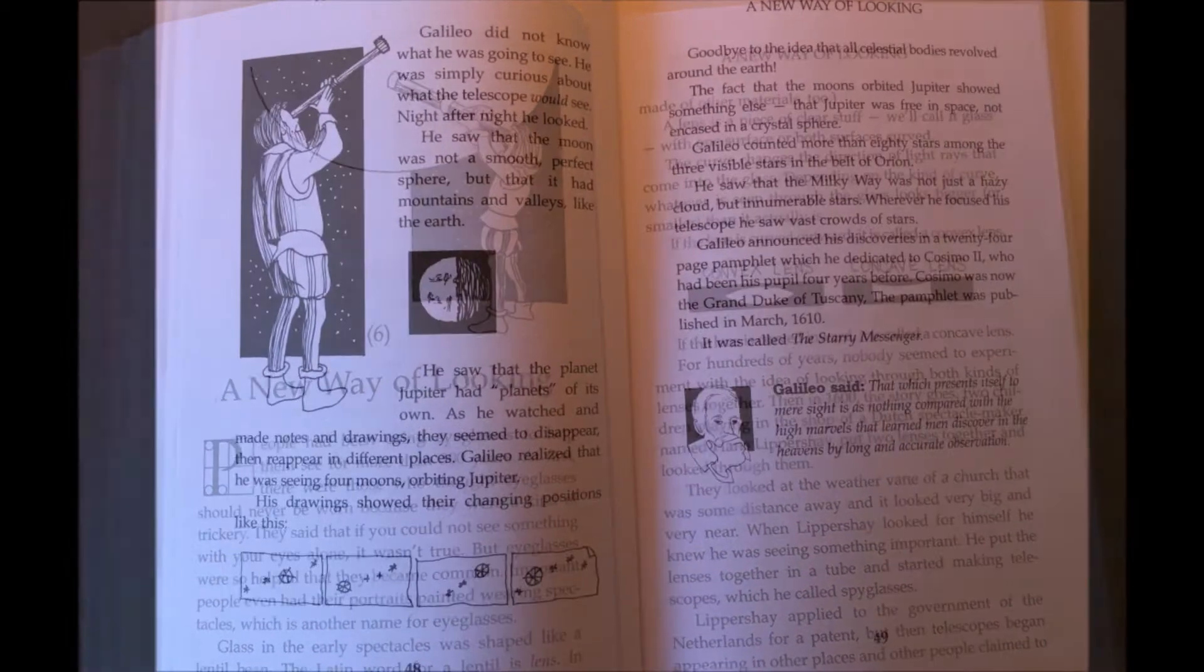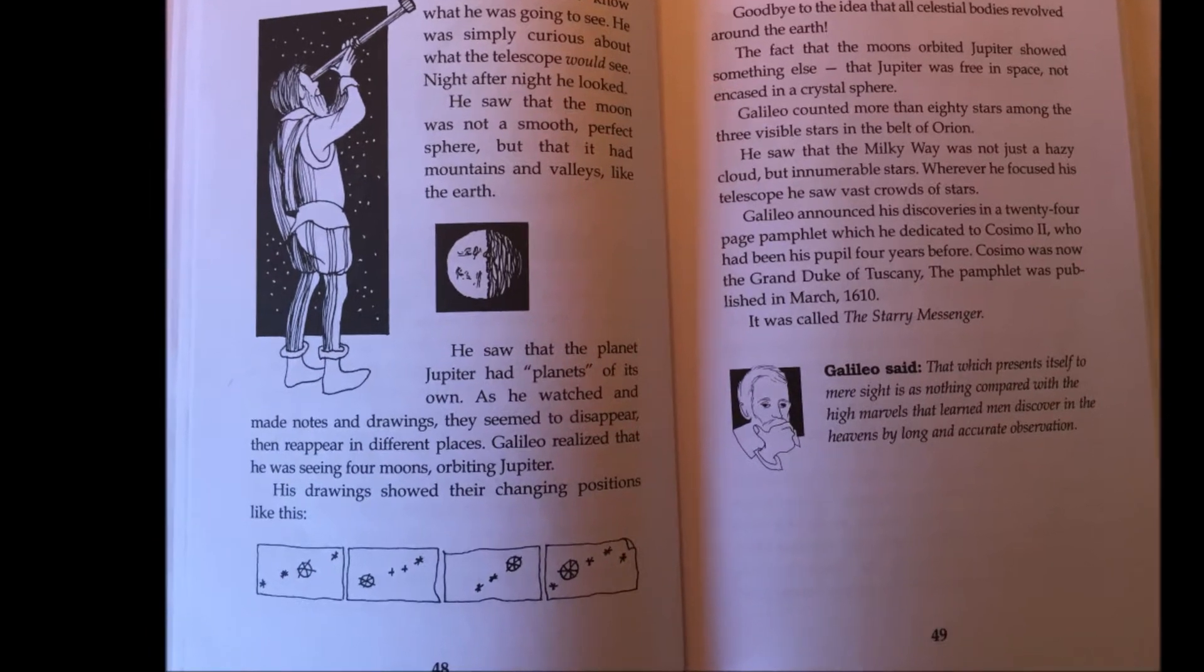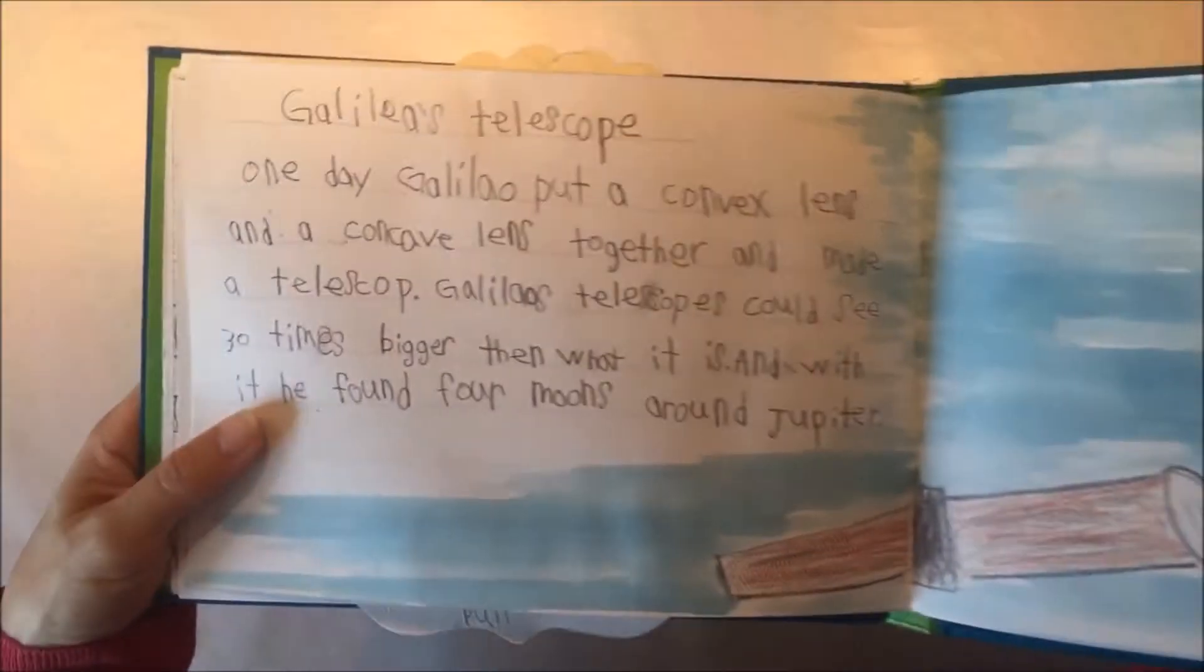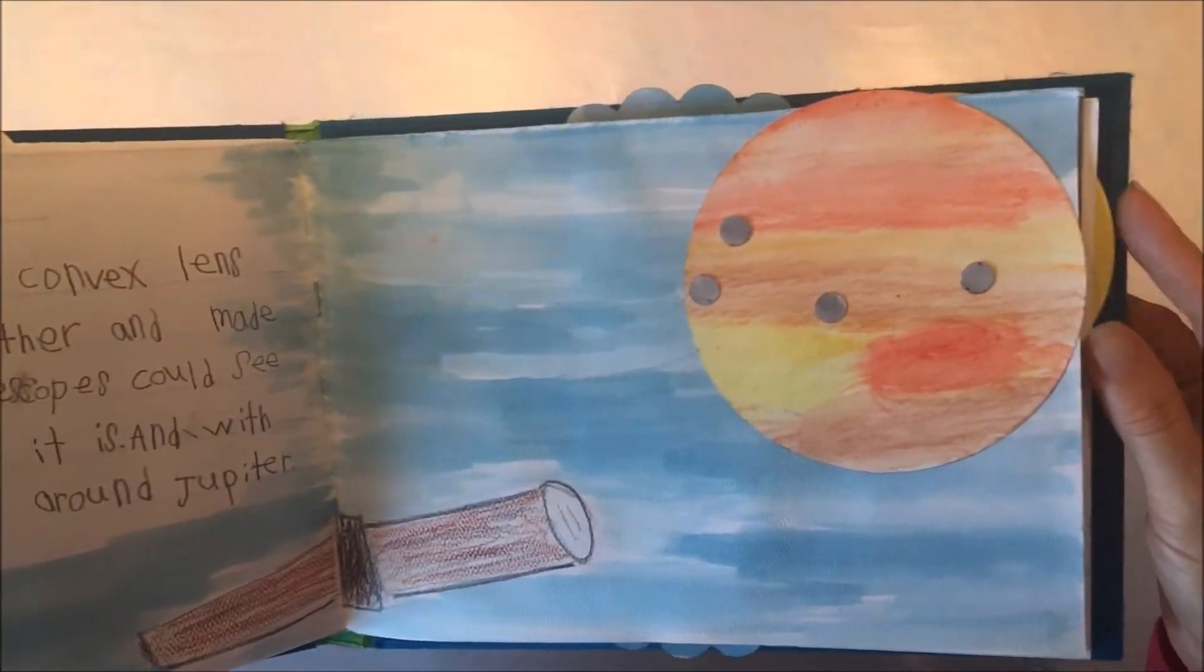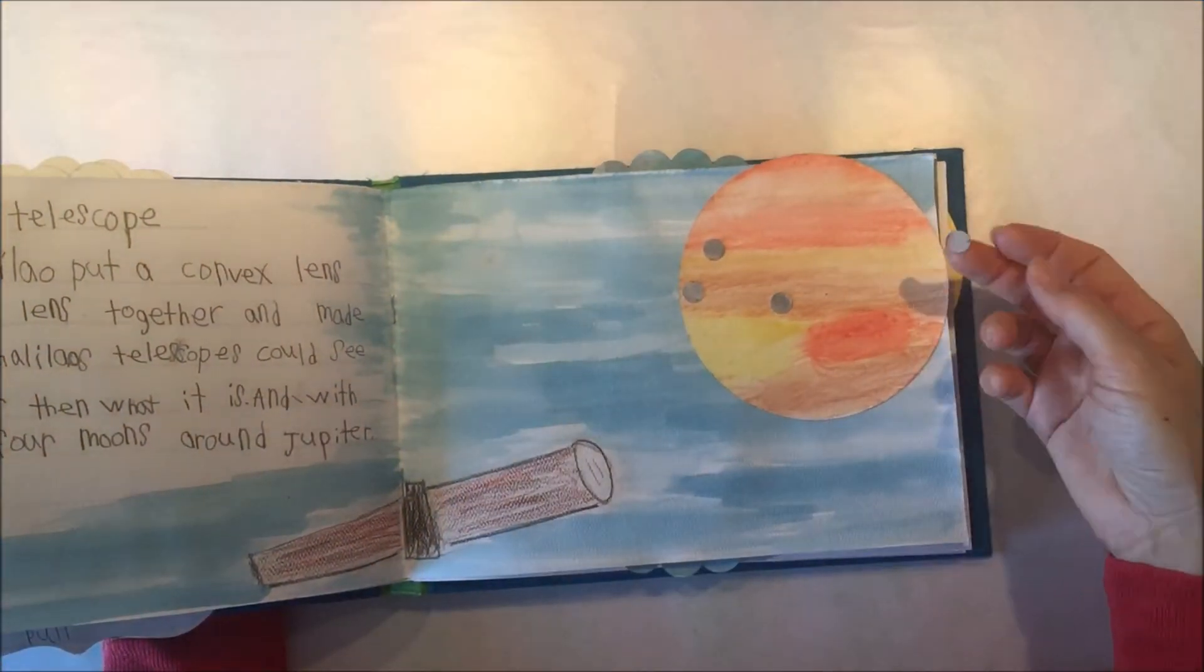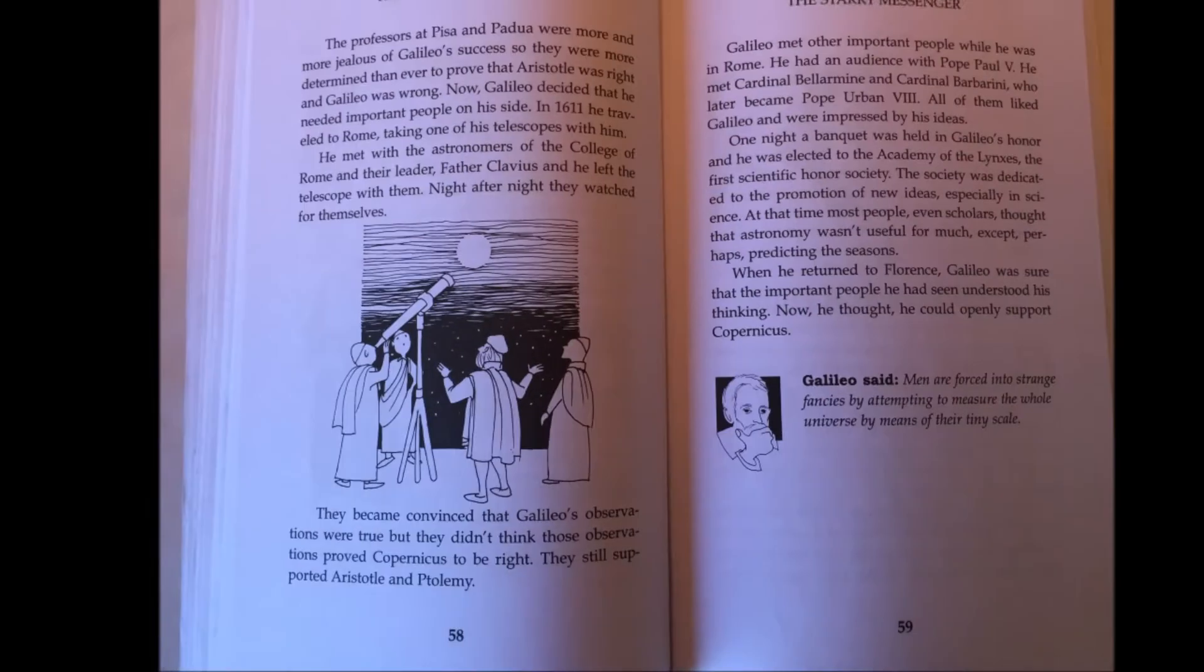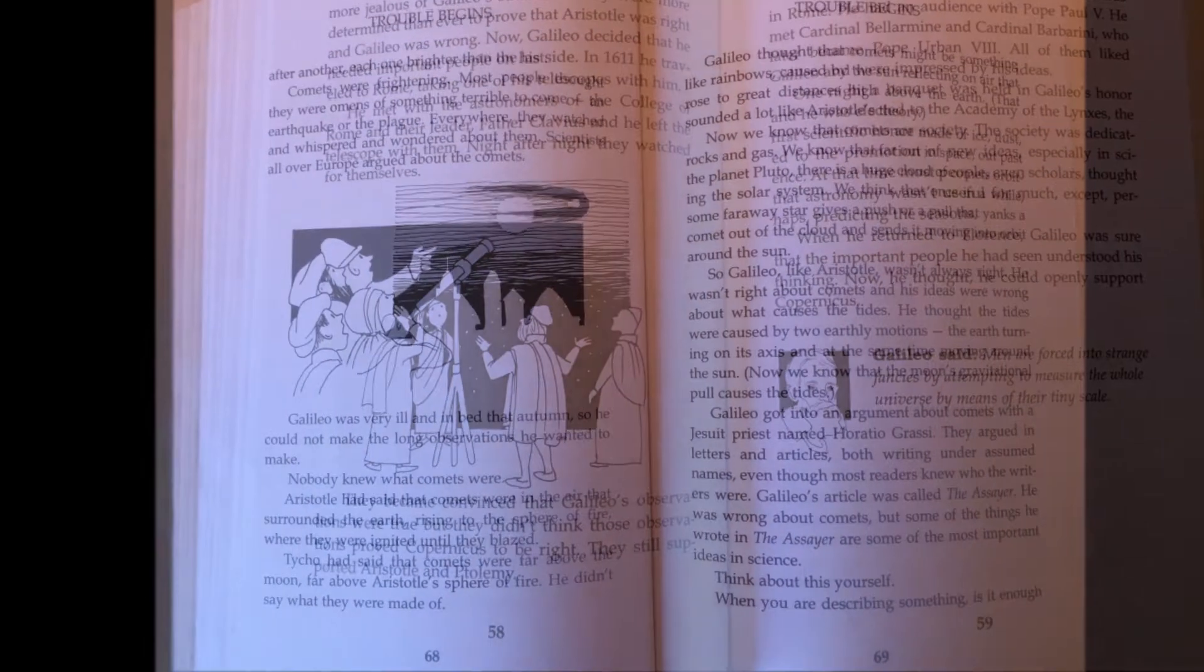So then we learned once that Galileo made the telescope, he was able to see a whole lot of things in the sky that weren't visible before. And the first thing that he found were the moons of Jupiter. And so that little element was interactive, you could move the moons around.